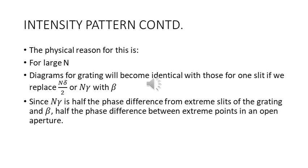We now discuss the physical reason why the resemblance of any principal maximum and its secondary maxima to a single slit pattern increases. For large N, the diagrams for the grating will become identical with those for a single slit if we replace the factor nδ/2 — that is, nγ — with β. Now nγ is half the phase difference from the extreme slits of the grating, and β is half the phase difference between extreme points in an open aperture.